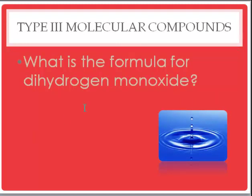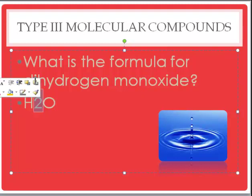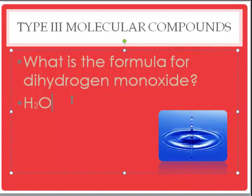What's the formula for dihydrogen monoxide? We have two hydrogens and one oxygen. Obviously, we call that more commonly water — H2O, dihydrogen monoxide. That's often a trick question on quizzes.